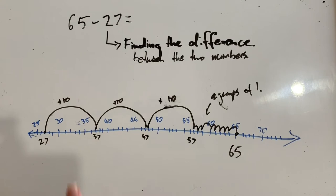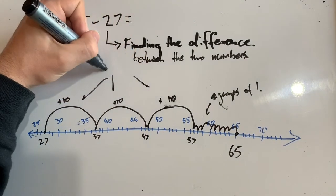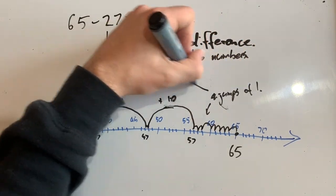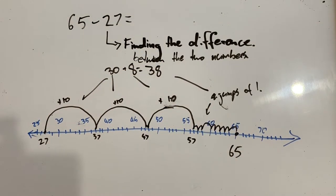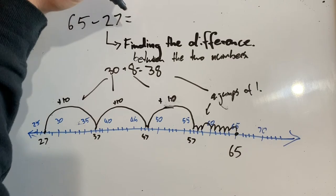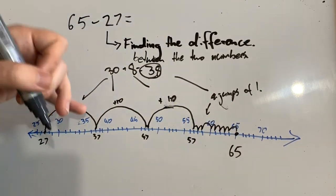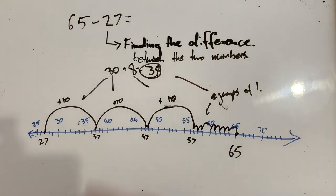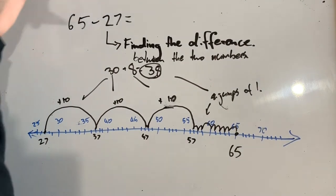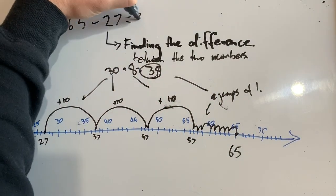So I've got eight jumps of one and three jumps of 10. Three jumps of 10 is 30, plus the eight I've got here is 38. That is the difference. So the solution to 65 minus 27 — how many times I had to jump: three jumps of 10 and eight jumps of one — is 38. The difference between 65 and 27, how far I had to go to get from 27 to 65, is 38.